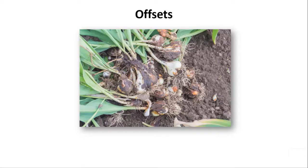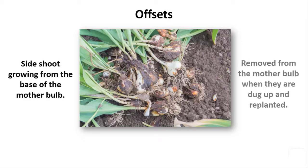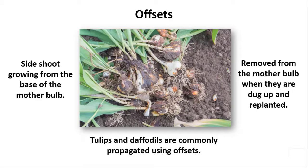Offsets. These are a type of side shoot that grow from the base of the bulb. Offsets are removed from the mother bulb when they are dug up and replanted into the soil. Tulips and daffodils are commonly propagated using offsets.